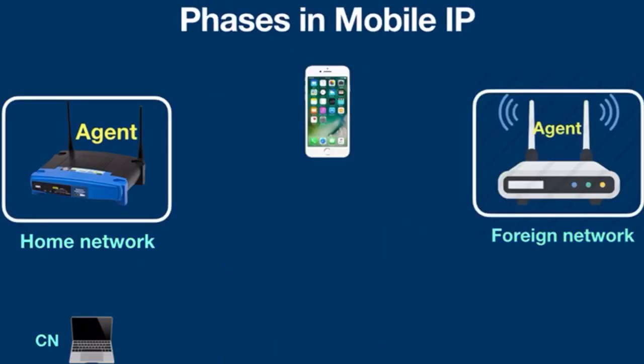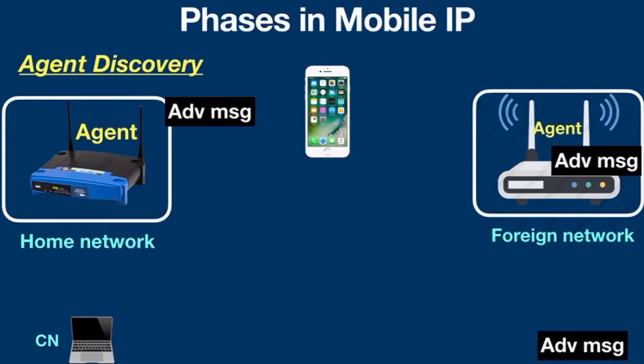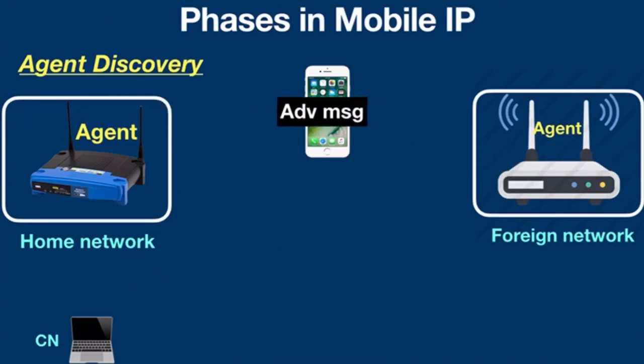The Mobile IP process has three main phases. The first is Agent Discovery. Agents advertise their presence by periodically broadcasting agent advertisement messages. The mobile node, upon receiving these messages, determines whether the message is from its own home agent and whether it is in the home network or a foreign network.